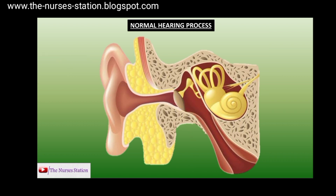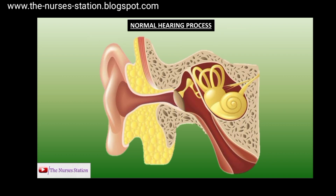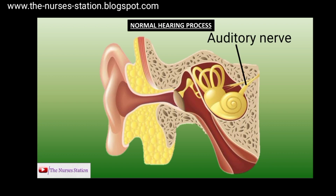The eardrum vibrates and in turn vibrates the three bones: the malleus, incus, and the stapes. Through this mechanism, the vibrations are transmitted from the outer ear to the inner ear. The vibrations of the stapes cause movement of the fluid in the cochlea, which in turn causes movement of the hair bundles present on the hair cells. This converts the sound waves into electrical signals, which are then transmitted from the inner ear to the brain through the auditory nerve, and we hear the sounds.